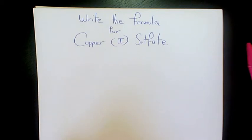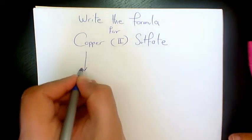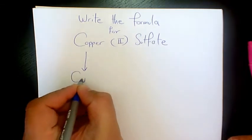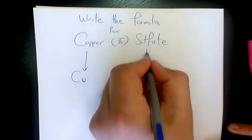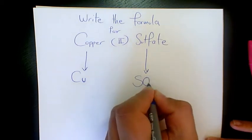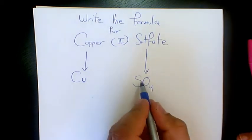What's up guys, this is Massey. Welcome to another video. In this video I want to write the formula for copper(II) sulfate. Copper is Cu and sulfate is a polyatomic ion, SO4.